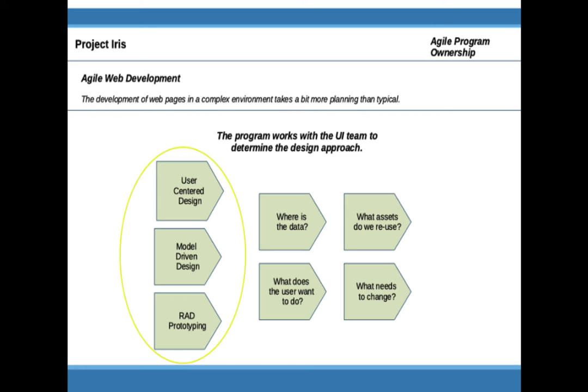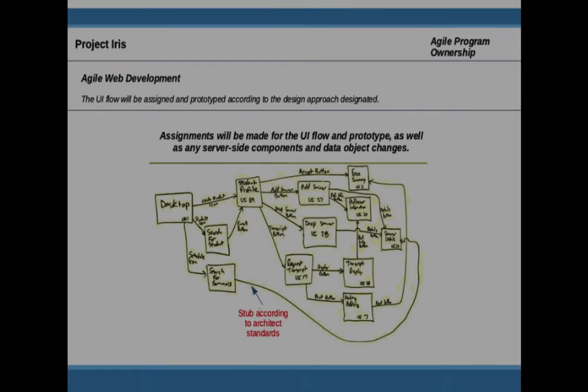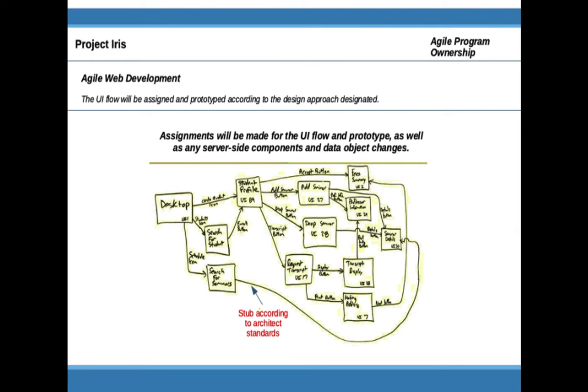Regardless of which approach the program, product owner, and the team decide on, they will probably start with determining what data is involved, what the user wants to do, and then move on to what assets are involved and what changes need to happen. The team will likely start by creating a flow of all the user interface components and begin prototyping.